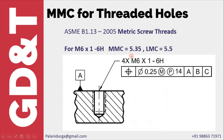From this table it is clear that the maximum material condition of the M6 x 1 threaded hole is 5.35 mm and the least material condition is 5.5 mm. The positional tolerance of 0.25 applies when the pitch diameter is at 5.35. When the pitch diameter departs from 5.35 towards 5.5, we get a bonus tolerance of 0.15, so the total tolerance becomes 0.4.